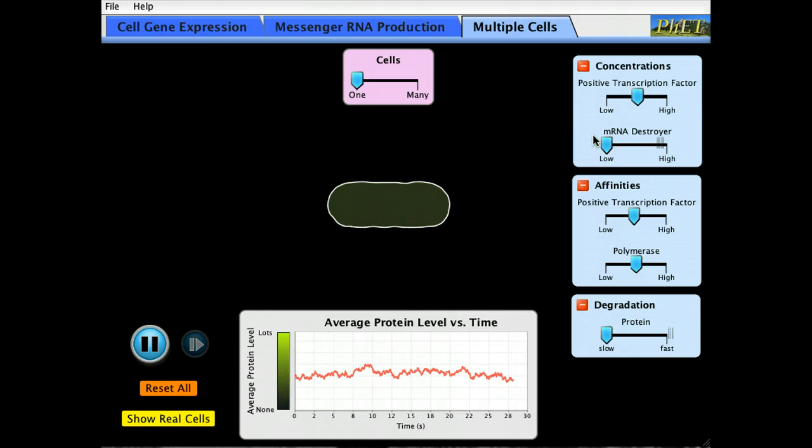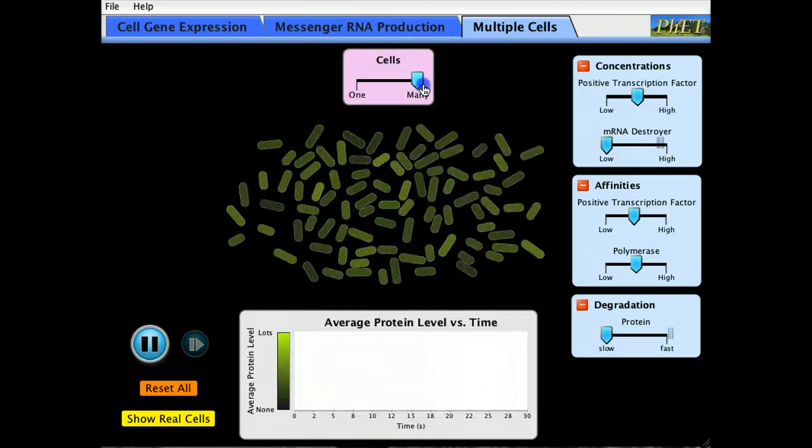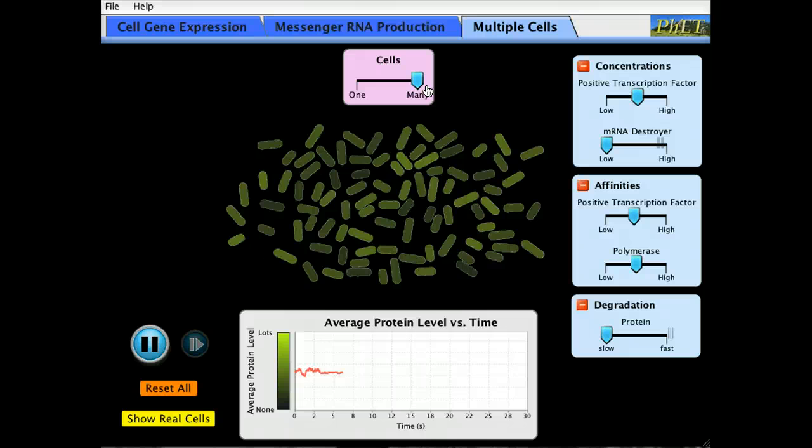Up to now we've been looking at a single cell, which is noisy, but now let's look at a clone of cells. We go up to the slider here. Now we have a clone of cells. Now you can see that the cells themselves are flickering on and off. Each cell is behaving like the cell we were just looking at, but all these cells are genetically identical. They're a clone.